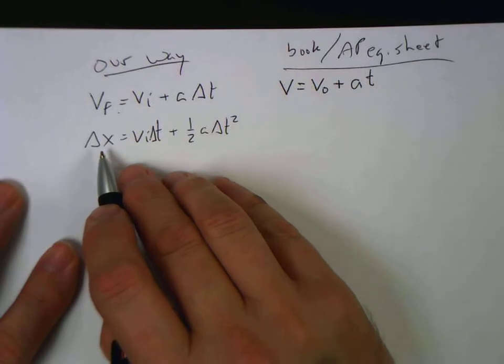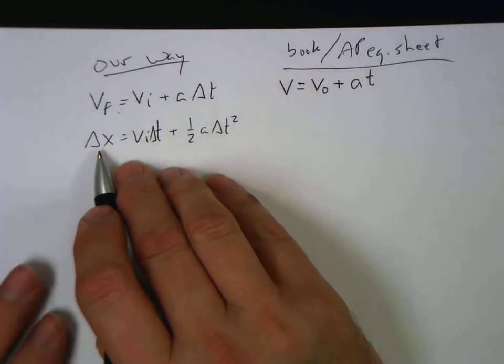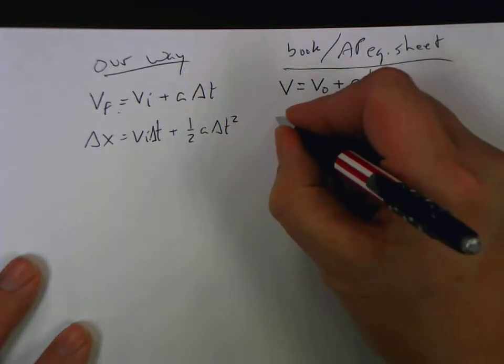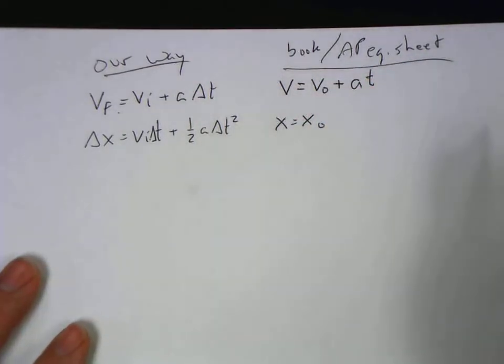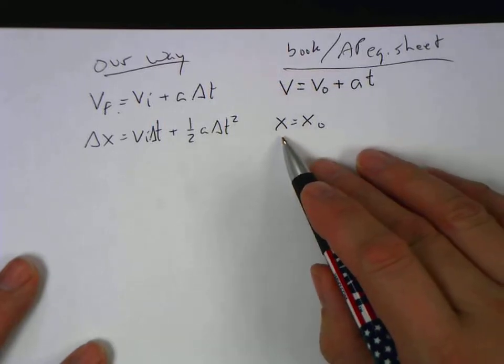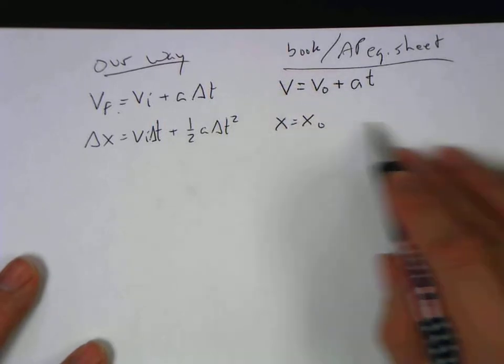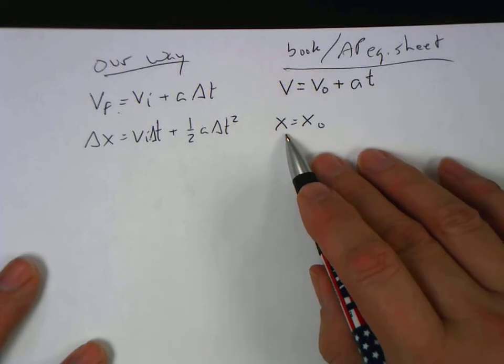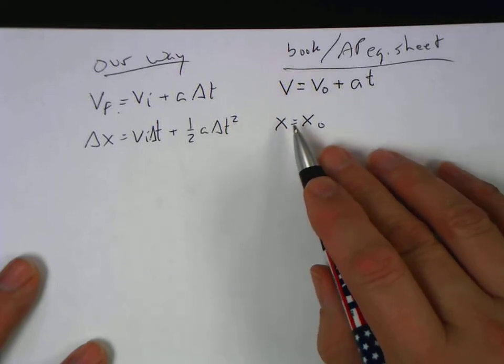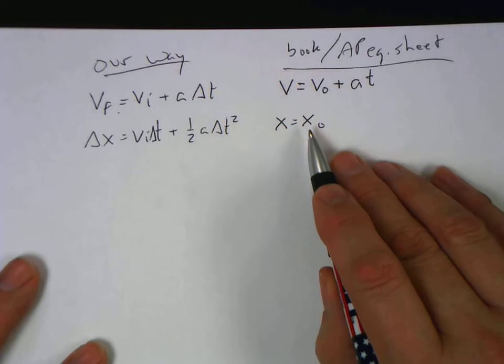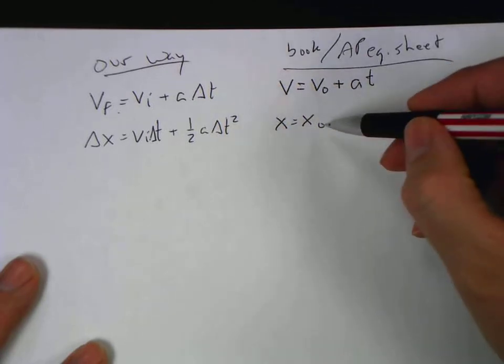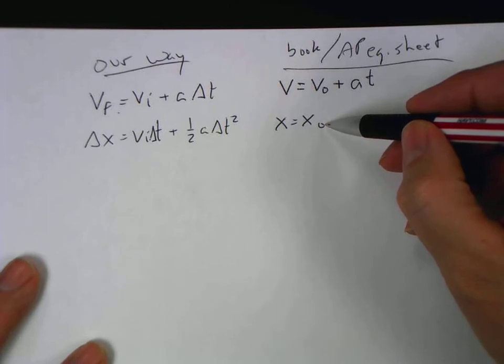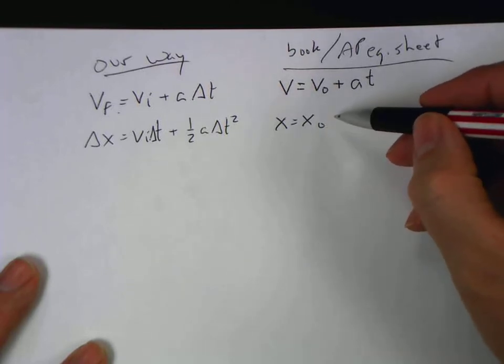So there's some argument for this. The other thing that they do, which I hate, is that they break the displacement into initial and final position. And so they say that x is equal to x naught. If you were to subtract x naught to the other side, you'd have x, which is the final position, minus x naught, which is the initial position.